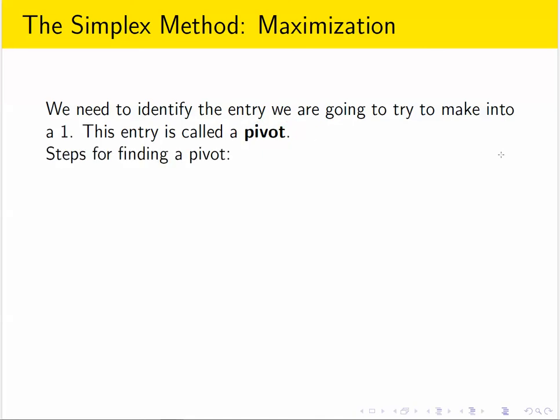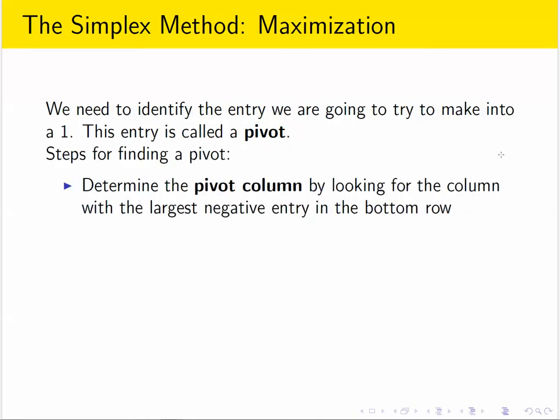So how do we find a pivot? Well, there are two steps. The first thing is you look at all of the columns, you look in the bottom row, and look for the largest negative value in that bottom row. Whatever column has the largest negative value in the bottom row is what we call the pivot column.